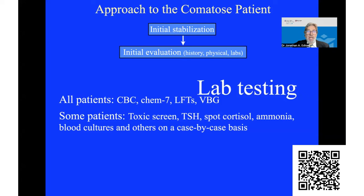For lab testing, there are some tests that every patient needs: a complete blood count, a CHEM 7, liver function tests, a venous blood gas, and most patients will need a toxic screen. Some patients will need thyroid testing, adrenal testing, and ammonia levels. Ammonia levels, even in a patient with liver disease, don't correlate very well with whether liver disease is causing encephalopathy, so I caution you about that. If there's a question of sepsis, get blood cultures, plus other tests on a case-by-case basis.